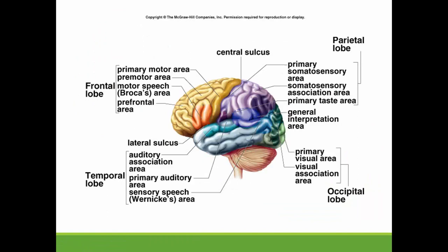Here we can see a view of the brain including the four lobes. When we talk about lobes, we are looking at the different areas in the cerebrum and the cerebral hemispheres, specifically in the cerebral cortex. This yellow area is the frontal lobe, this purple area is the parietal lobe, at the back we have the occipital lobe, and on the side at the temples we have the temporal lobe. Each of the lobes is responsible for different areas.